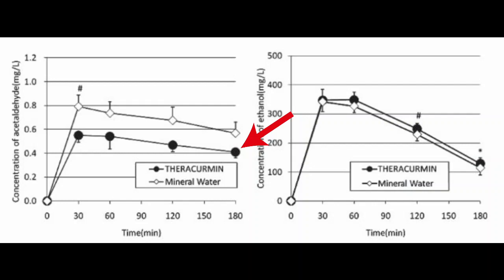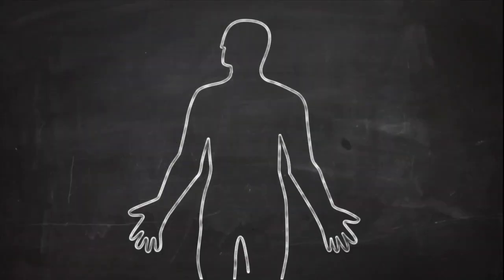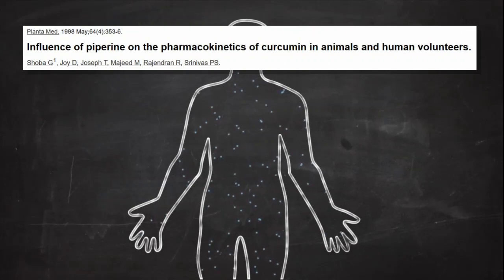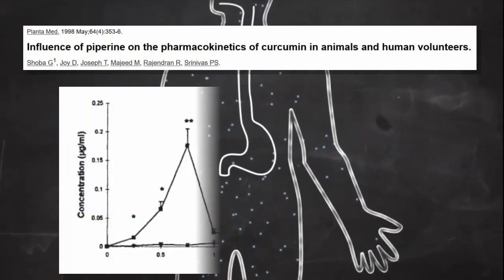There is only one problem, the body doesn't easily absorb curcumin. But a study found that piperin, a component of black pepper, improves the bioavailability.